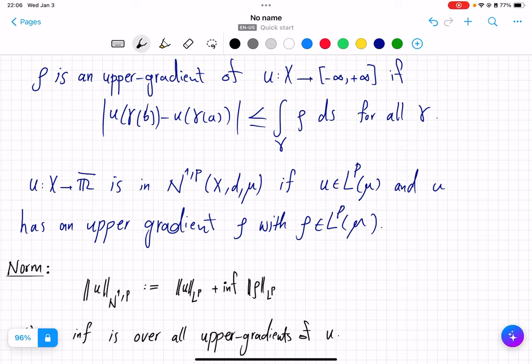We called ρ a Borel non-negative function defined on a metric space x, an upper gradient of another function u defined on x into extended real numbers.